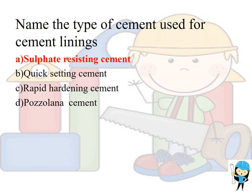Name the type of cement used for cement lining — the answer is sulphate resisting cement. Quick setting cement is used for running water construction. Rapid hardening cement is used for high early strength. Pozzolana cement is used in marine constructions, hydraulic dam construction, and construction near the sea.